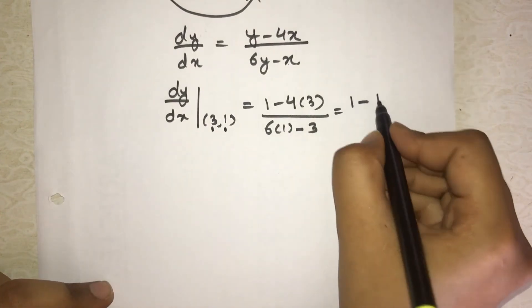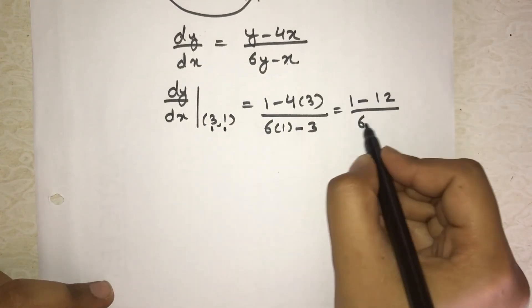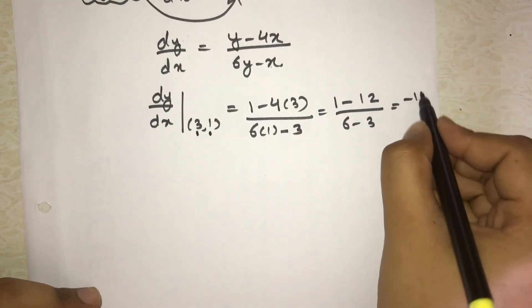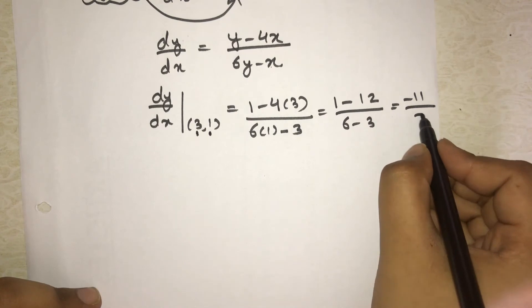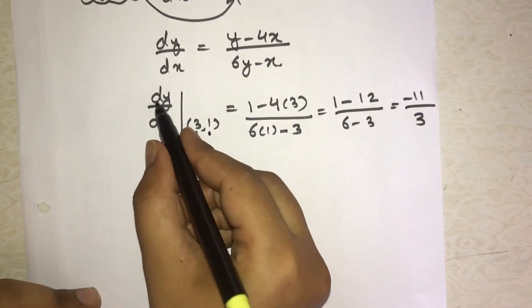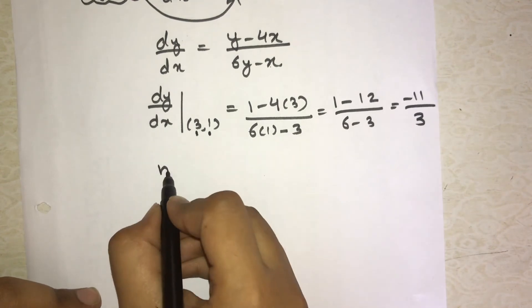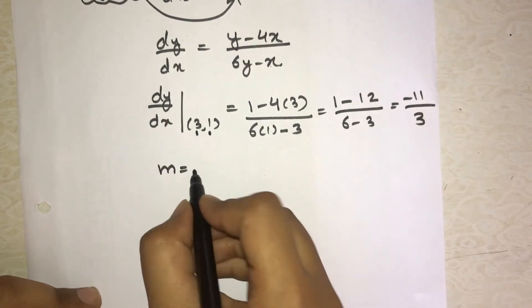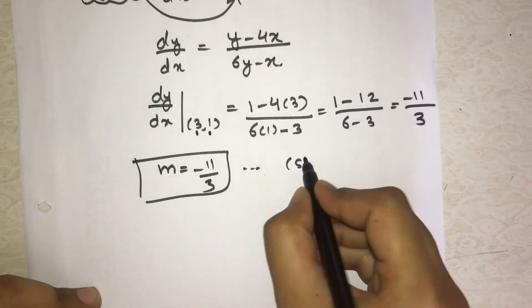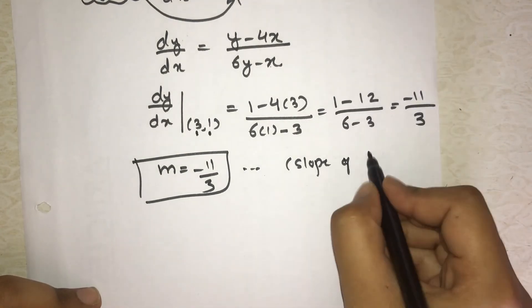This is our dy/dx. Now we have to find dy/dx at the point (3, 1). So dy/dx at (3, 1) equals: where there is x we put 3, where there is y we put 1. So here y is 1, so 1 minus 4 times 3 divided by 6 times 1 minus x which is 3. Solving this: 1 minus 12 is -11 upon 6 minus 3 which is 3. So our dy/dx is -11/3.